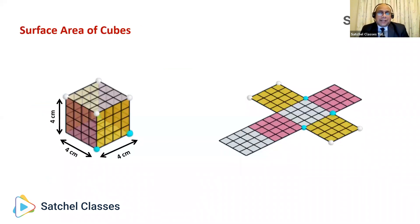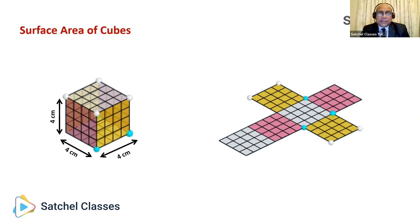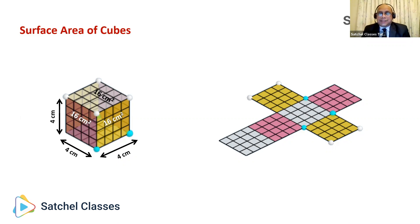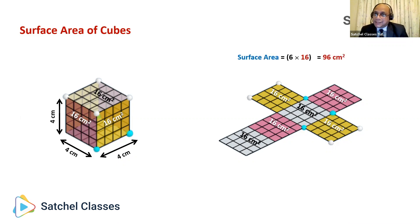Let's take an example — the surface area of this cube. In a cube, all dimensions are the same; in this case, four centimeters. Each face of a cube is a square, so the area of each face will be four squared, which is 16 centimeters squared. A cube has six faces, as you can see from the net alongside. Each face has an area of 16 centimeters squared, so the total surface area is 6 times 16, which is 96 centimeters squared.